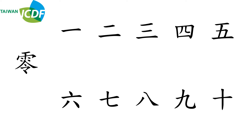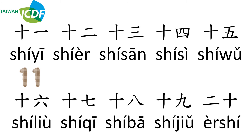Numbers are very logical in Mandarin. If you know how to say numbers from 0 to 10, then you will be able to count to 99. The following numbers are 11, 12, 13, 14, 15. I believe some of you have noticed the combination. For example, 11 is 10 and 1. So continuing: 16, 17, 18, 19, 20. You could see 20 is 2 and 10.